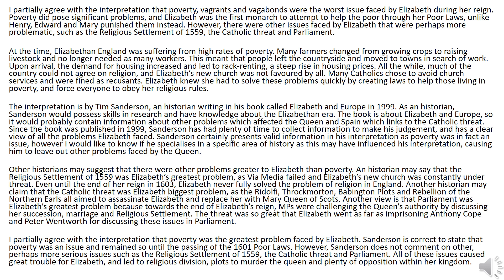I partially agree with the interpretation that poverty, vagrants and vagabonds were the worst issue faced by Elizabeth during her reign. Poverty did pose significant problems, and Elizabeth was the first monarch to attempt to help the poor through her poor laws — unlike Henry, Edward and Mary, who punished them instead. However, there were other issues faced by Elizabeth that were perhaps more problematic, such as the religious settlement of 1559 and the Catholic threat to Parliament.